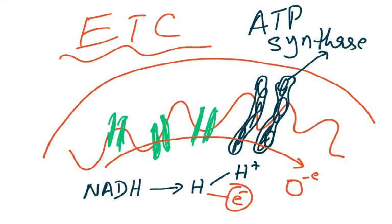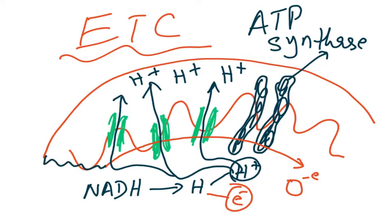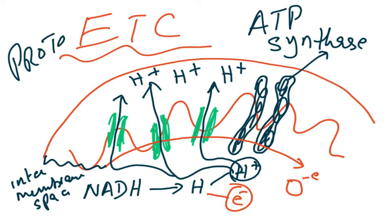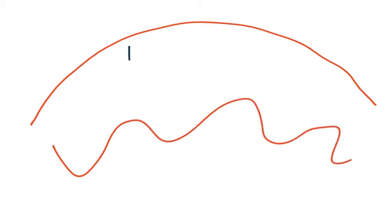During this process, the protons are pumped into the intermembrane space, so there is a high concentration of hydrogen in the intermembrane space. This creates a proton gradient — meaning we have a large number of hydrogen ions in the intermembrane space and none in the matrix.